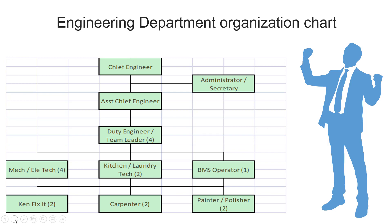Now let's discuss the engineering department organizational chart. The chief engineer and assistant chief engineer share common goals, and the engineering secretary or administrative engineering coordinator reports to them. Routine engineers are team leaders who delegate day-to-day operations and maintenance activities of plant and machinery, and upkeeping of guest rooms and public areas, with help of various technical staff such as Can-Fix-It or make-ready room technicians, HVAC technicians, electricians, BMS technicians, painters, carpenters, masons, audiovisual technicians, kitchen and laundry technicians.